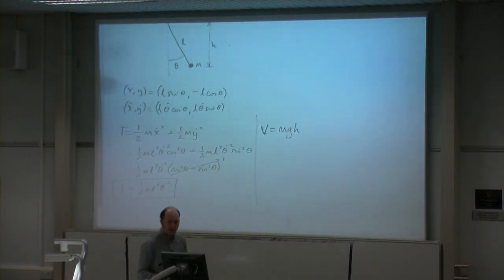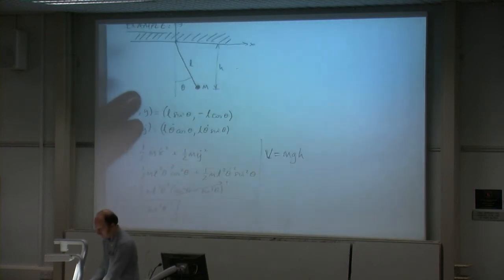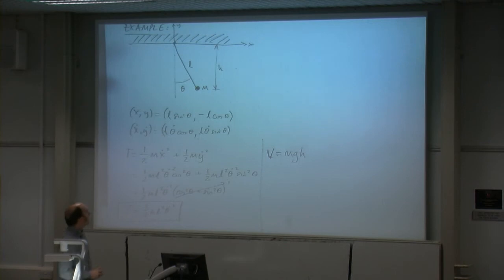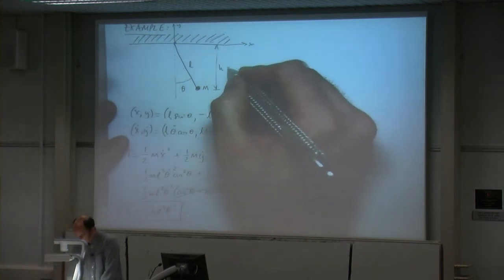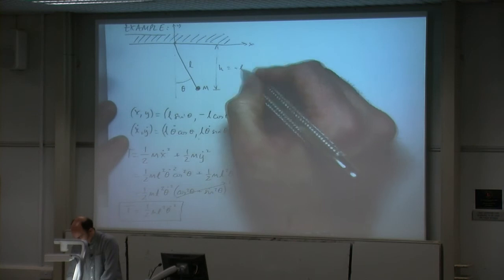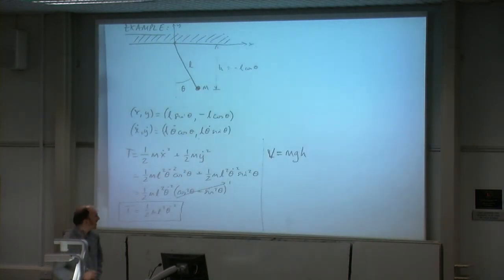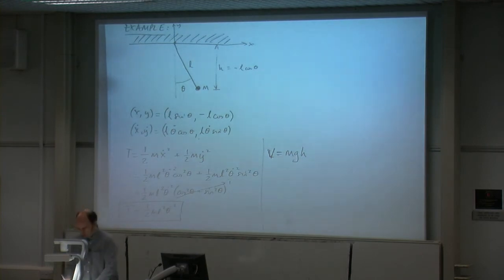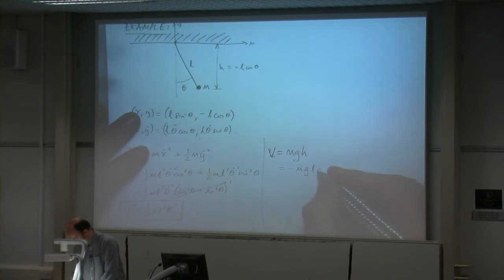The potential energy is due to gravity. If H is the vertical position of the bob, we know H = -L cosine theta. So V = -mgL cosine theta.